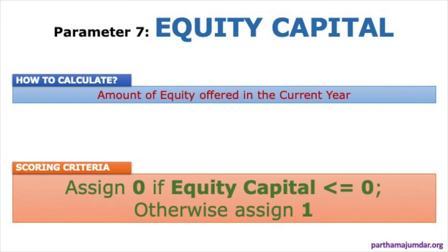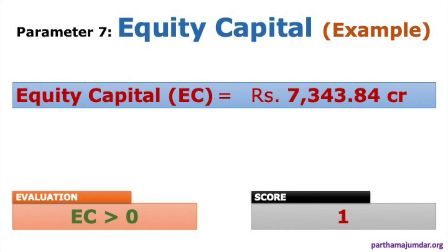The seventh parameter is Equity Capital — the amount of equity offered in the current year. Piotrowski says if equity capital is less than or equal to 0, assign 0; otherwise assign 1. In financial year 2017-18, the equity share capital for Gujarat Alkalies and Chemicals Limited is greater than 7,000 crore rupees, so equity capital > 0 and we assign a score of 1.